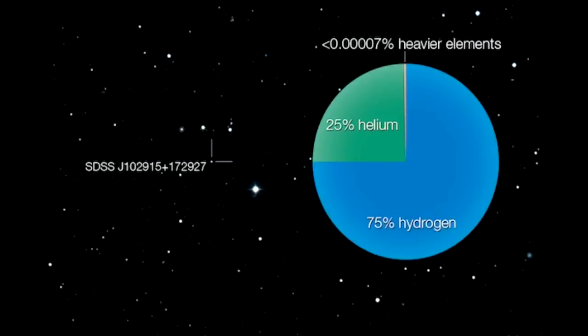In the universe, 75% is hydrogen and the other 25% is helium.